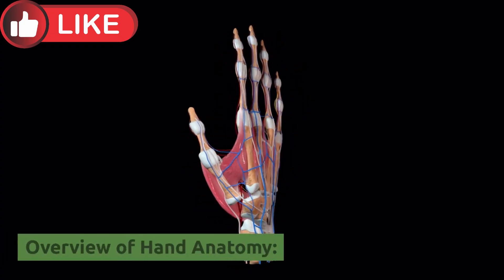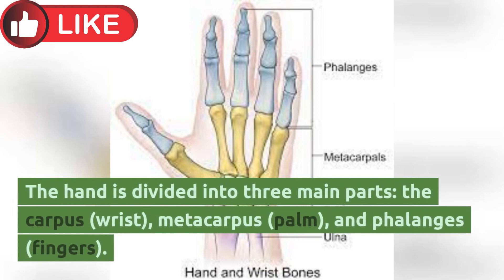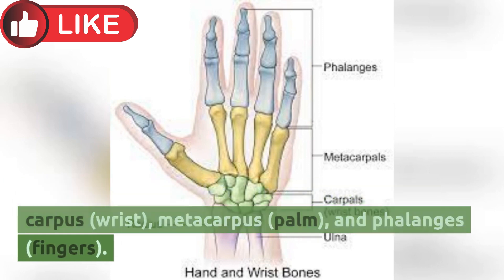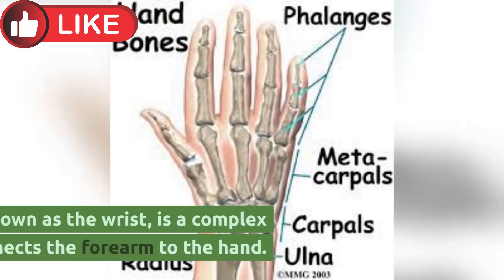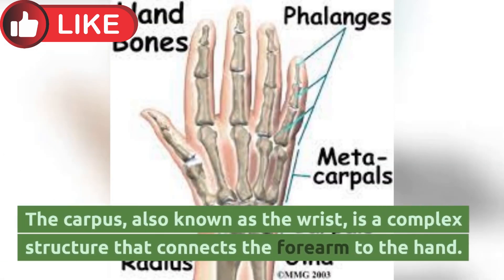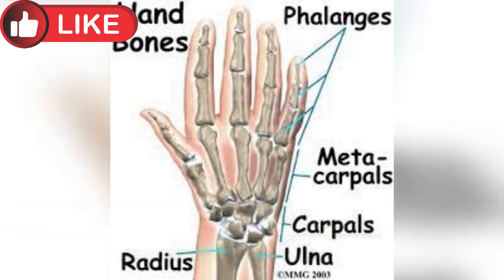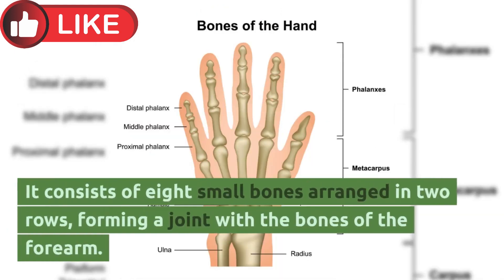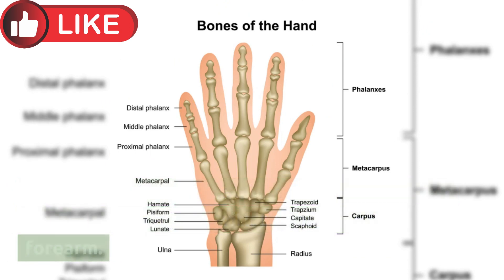The hand is divided into three main parts: the carpus (wrist), metacarpus (palm), and phalanges (fingers). The carpus, also known as the wrist, is a complex structure that connects the forearm to the hand. It consists of eight small bones arranged in two rows, forming a joint with the bones of the forearm.